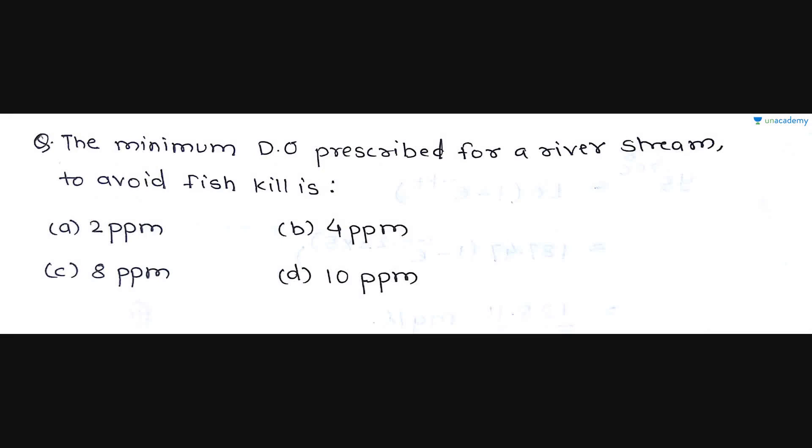The next question is, the minimum DO prescribed for a river stream to avoid fish kill is? The minimum dissolved oxygen that should be present in a river stream is 4 ppm. Below 4 ppm, if DO is there, then it will cause danger to the aquatic life and the fish will get killed. So the minimum DO prescribed for a river stream to avoid fish kill is 4 ppm. It should not be below 4 ppm. This is the limit for that. So option B is the correct option for this question.